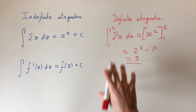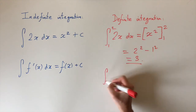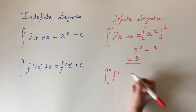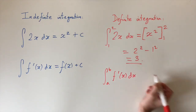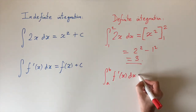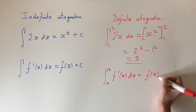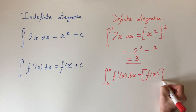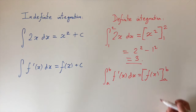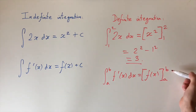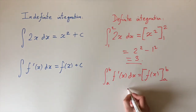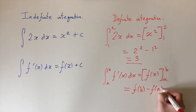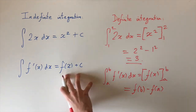For definite integration it's the same story except we have limits, which I'll call a and b in general. We're integrating f′(x) dx. Starting off the same, we integrate the function to get f(x). We don't need the constant this time, but we actually evaluate this function at the limits a and b. Using the same strategy, we start with the top limit and subtract the bottom limit, which gives us f(b) minus f(a).